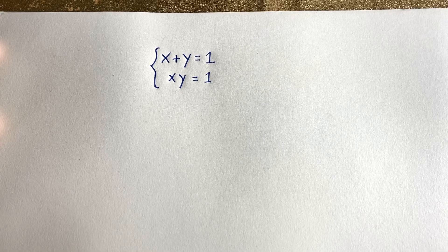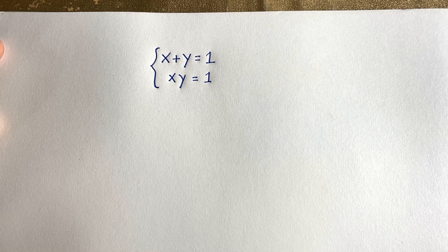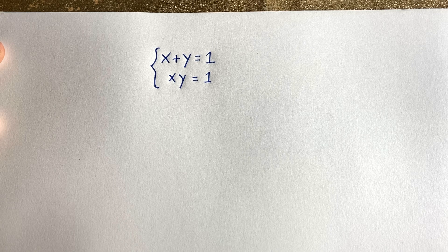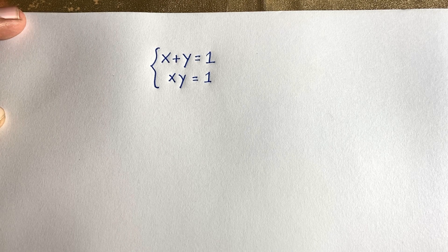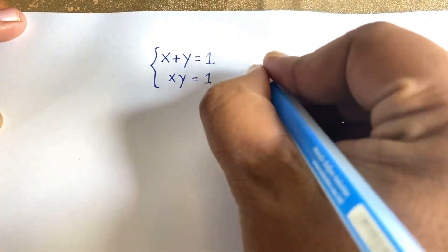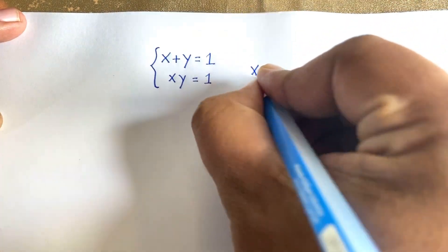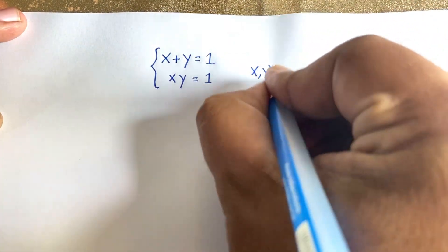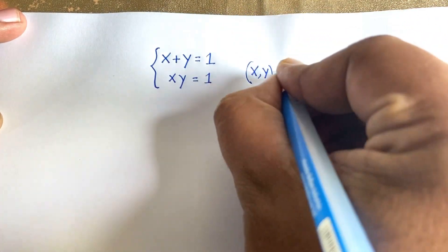Hello everyone, welcome to Russell's classroom. Today we have solved a wonderful maths olympiad question. This question is: x plus y is equal to 1, and x times y is equal to 1. We need to find x and y.